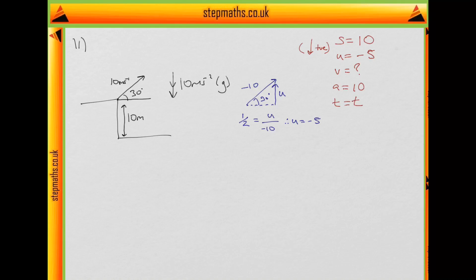So we look at our Souvat equations now, and we look at what we have and what we don't know. So we have S, we have U, and we have A, and we're trying to find T. So the equation that springs to mind is S equals UT plus one-half AT squared. If we sum in our values, we get that 10 equals minus 5T plus one-half times 10, 5, T squared.